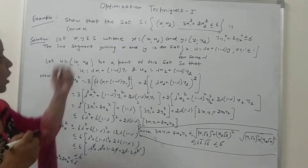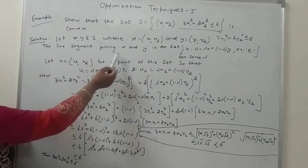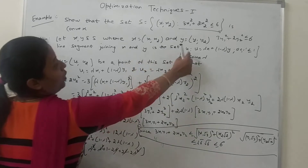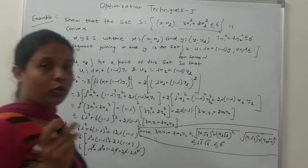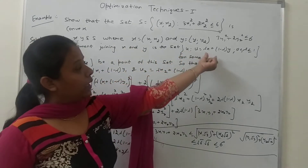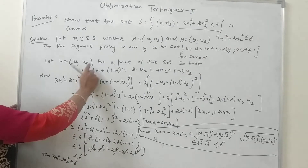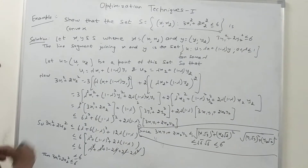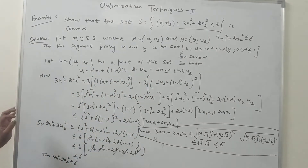Now we have to show that if we join these two points by a line segment, that line segment should lie in the same set. The line segment joining X and Y is defined as point U = λX + (1−λ)Y, where λ lies between 0 and 1. This is the definition of a line segment. So U = (U1, U2) where U1 = λX1 + (1−λ)Y1 and U2 = λX2 + (1−λ)Y2.